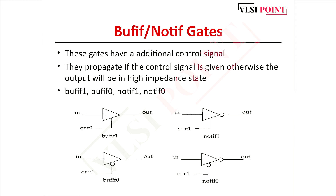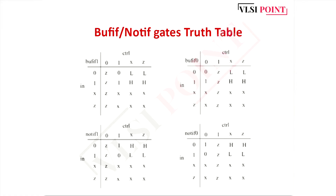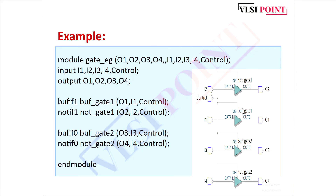Similarly, notif1 is a not gate with active high control signal, and notif0 is a not gate with active low control signal. Here you can see the truth tables for bufif1, bufif0, notif1, and notif0. I hope this is clear. In this example, you can see how to write the Verilog code for this circuit. The first gate is a not gate with active high control signal - bufif1. The third one is bufif0 and the last one is notif0.